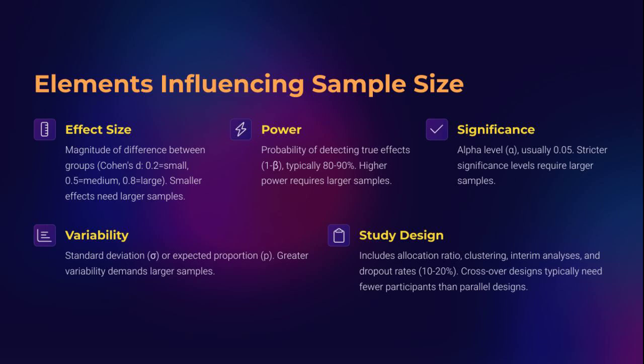Five primary elements dictate how large or small your sample should be. First, effect size — the bigger the effect you expect, the smaller the sample you need. Second, power — aiming for higher power increases your sample size but improves your chances of detecting real effects. Third, alpha, or the significance level, usually set at 0.05. Tighter thresholds like 0.01 demand larger samples.